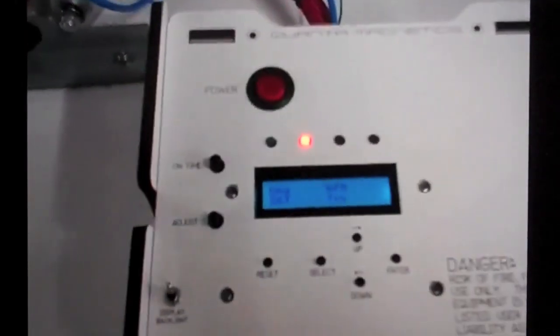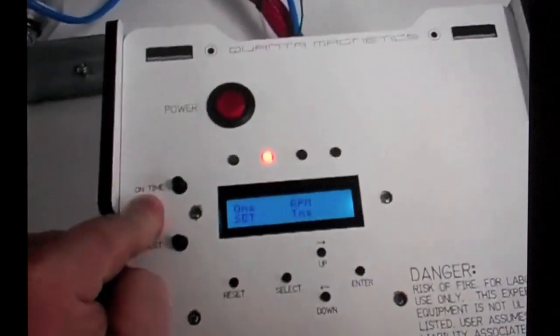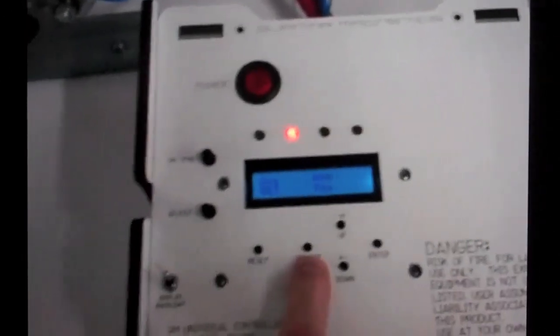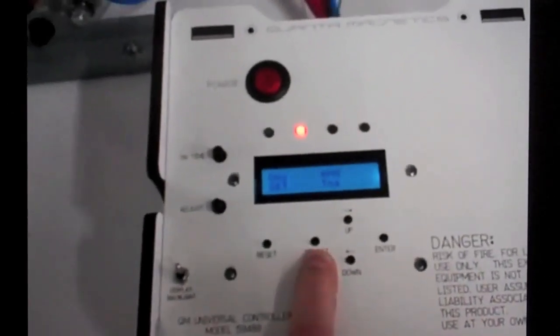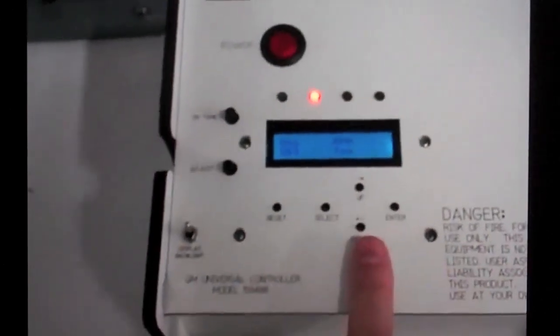Right now the only program buttons on here are the on-time for adjusting the pulse coil on-time, and select puts it in a run mode as well as the set mode. Enter and up and down do not do anything yet.